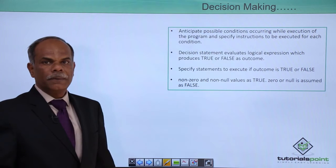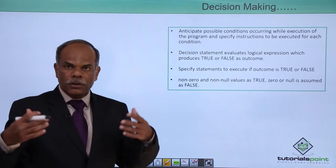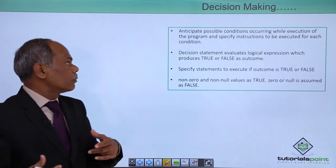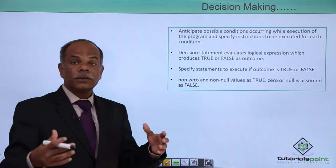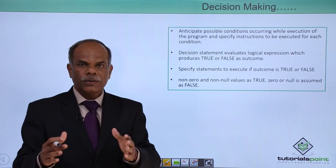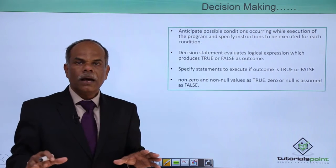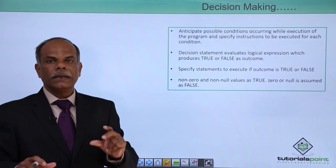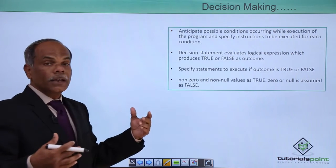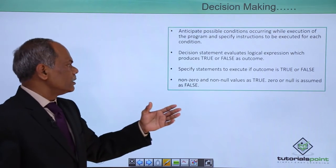The decision making statements in PHP are basically if, else-if, and else. In order to use these decision making statements, the programmer has to anticipate the possible scenarios or conditions that may occur in the algorithm and specify the instructions to be executed for each possibility. A decision making statement evaluates a logical expression as true or false. Non-zero and non-null values are treated as true, while 0 or null is treated as false.